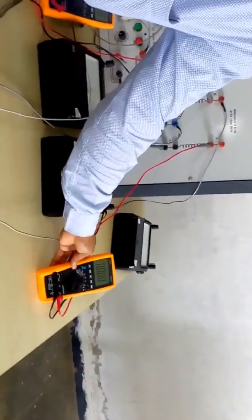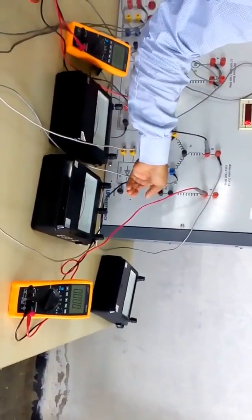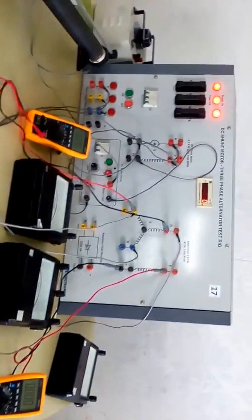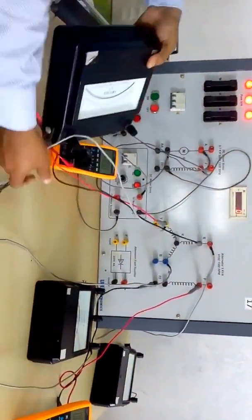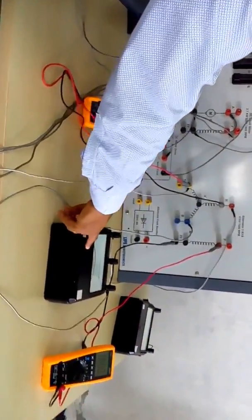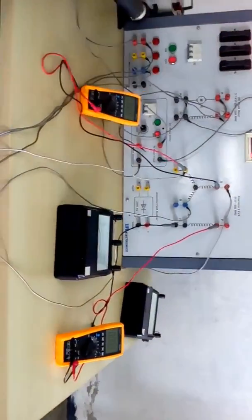through ammeter for one phase. So we'll start. This voltmeter is given across to read the stator voltage, and this multimeter reads the value of voltage across the field, and this ammeter reads the stator current.